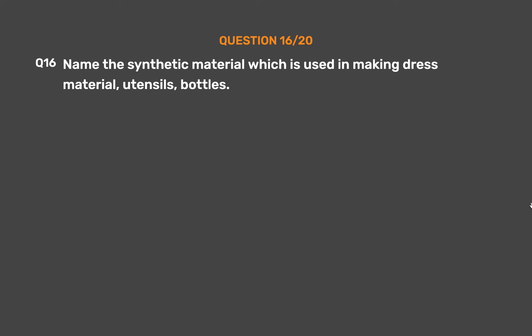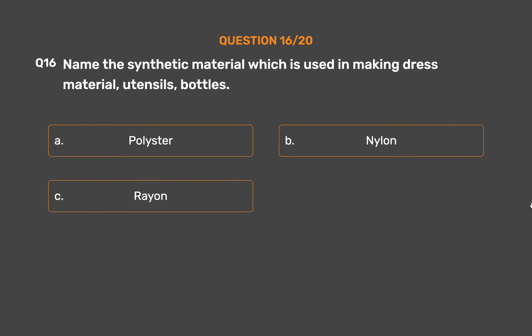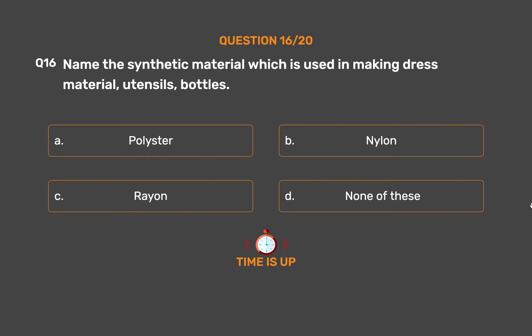Question Number 16. Name the synthetic material which is used in making dress material, utensils and bottles. Option A: Polyester. Option B: Nylon. Option C: Rayon. Option D: None of these. The correct answer is Option A: Polyester.